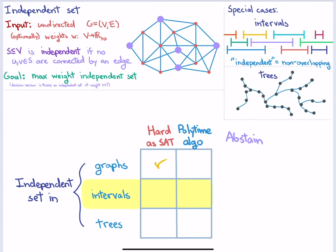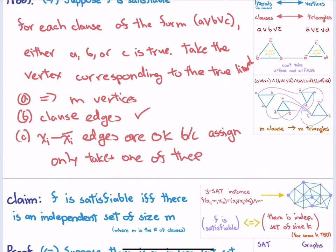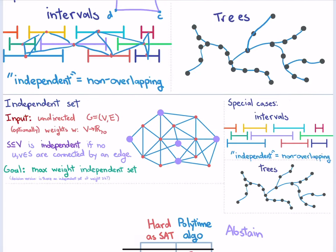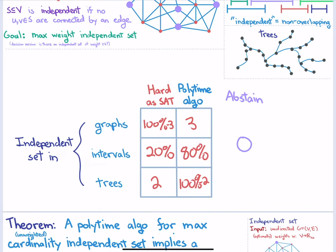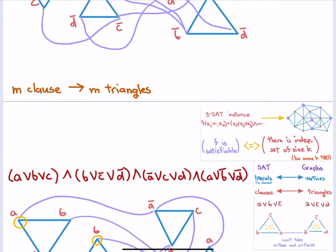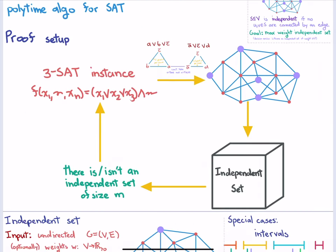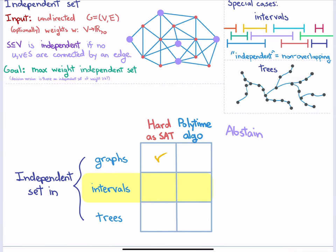Graphs turned out to be hard — you can encode the 3SAT problem with a bunch of triangles. Now for intervals: 80% of you thought there would be an algorithm, 20% thought it would be hard. Let's vote again.